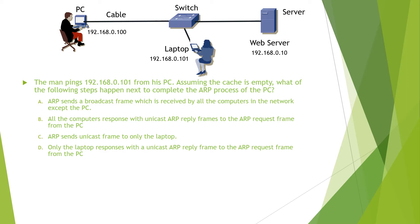The question reads: the man pings the IP 192.168.0.101 from his PC. Assuming the cache is empty, which of the following steps happen next to complete the ARP process of the PC? Option A: ARP sends a broadcast frame which is received by all the computers in the network except the PC.